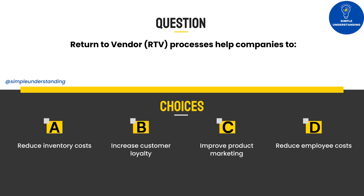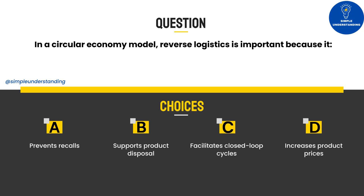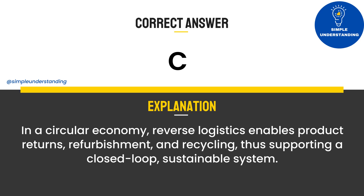Question 5: Return to Vendor (RTV) processes help companies to: A. Reduce inventory costs. B. Increase customer loyalty. C. Improve product marketing. D. Reduce employee costs. Answer: A. RTV reduces the burden of defective products by sending them back to suppliers, which helps to lower inventory-carrying costs. Question 6: In a circular economy model, reverse logistics is important because it: A. Prevents recalls. B. Supports product disposal. C. Facilitates closed-loop cycles. D. Increases product prices. Answer: C. In a circular economy, reverse logistics enables product returns, refurbishment, and recycling, thus supporting a closed-loop, sustainable system.